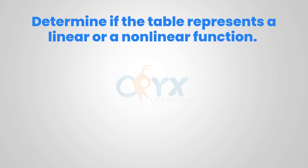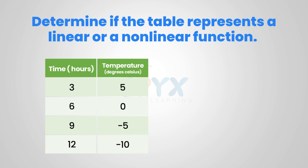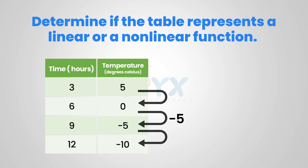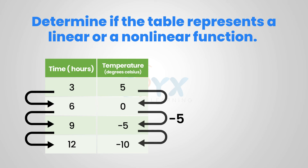Determine if the table represents a linear or non-linear function. Looking at the temperature in degrees Celsius, we can see that it decreases by 5 each time — from 5 to 0, 0 to negative 5, and negative 5 to negative 10. Looking at the time in hours, we can see that it increases each time by the same amount of 3, from 3 to 6, 6 to 9, and 9 to 12. Because of this constant rate of change of negative 5 over 3, the function is linear.